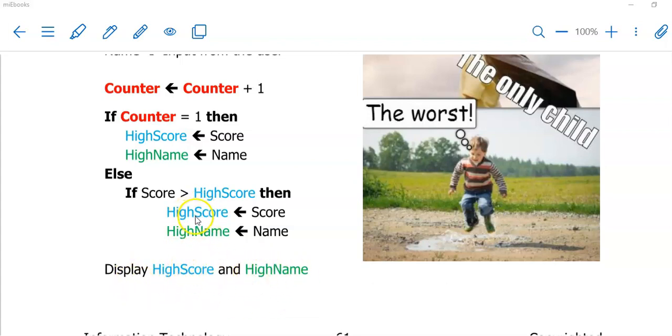I then have display high score and high name. High score is the value that is given here at the top in the if statements, and high name is the values given for the name stored as high name.